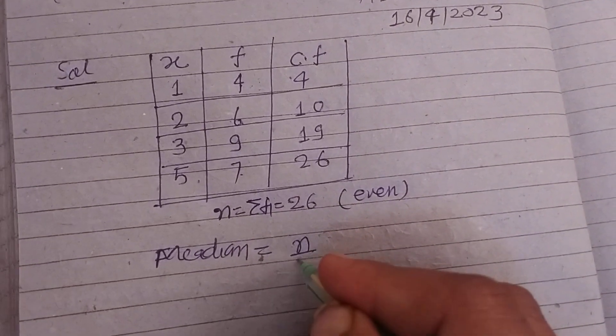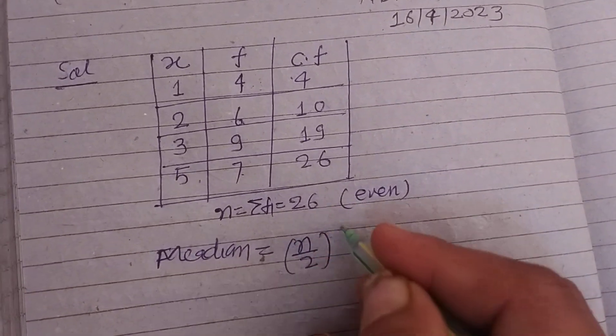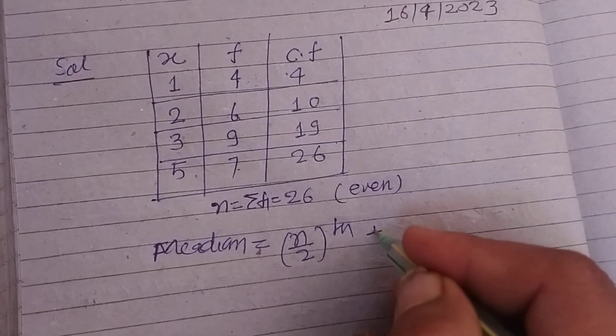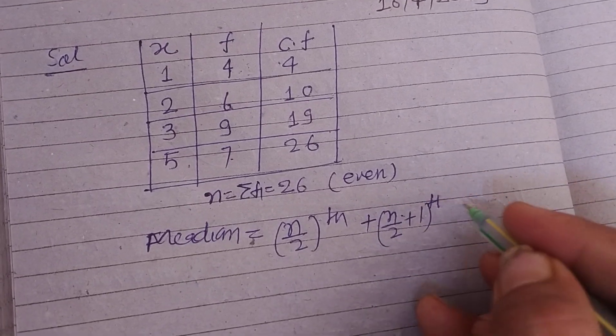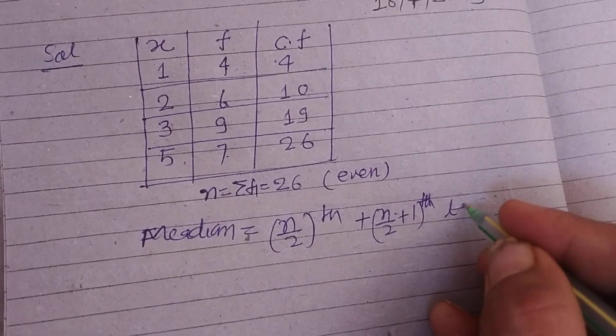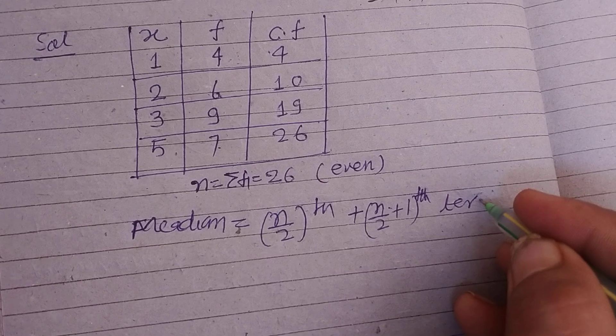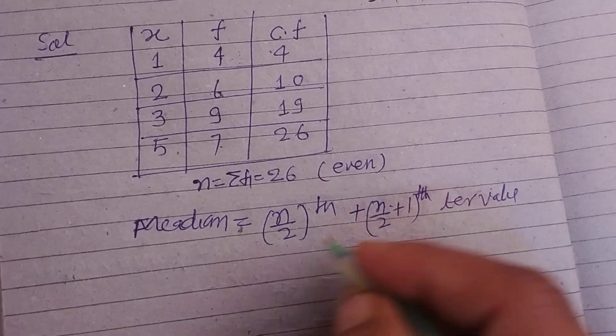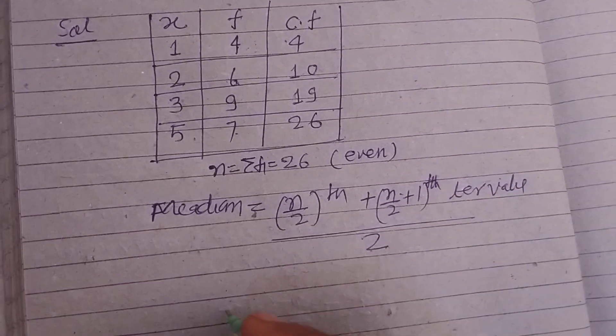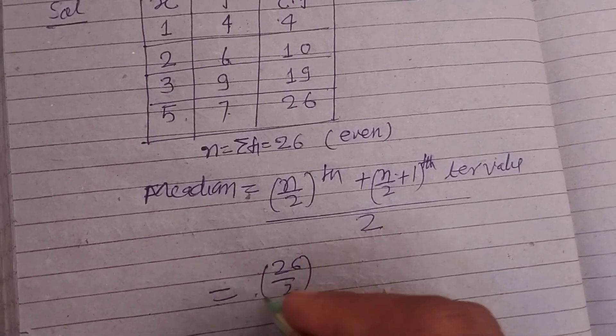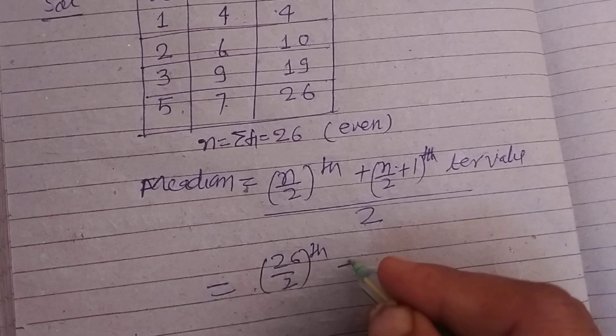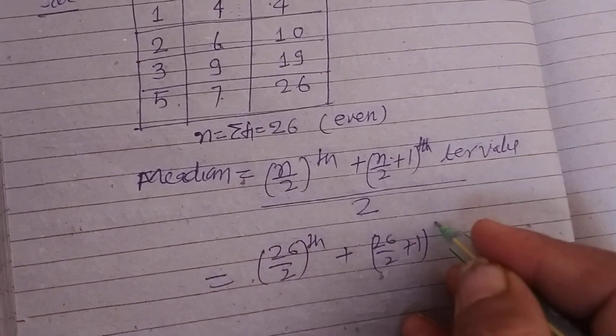Median equals n/2 term plus (n/2 plus 1) term, divided by 2. So here, 26/2 term plus (26/2 plus 1) term, divided by 2.